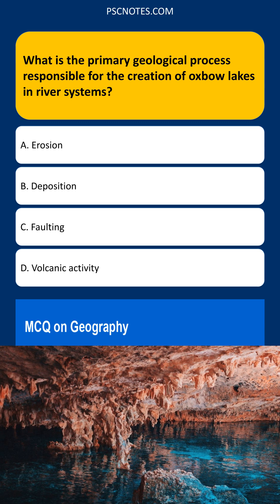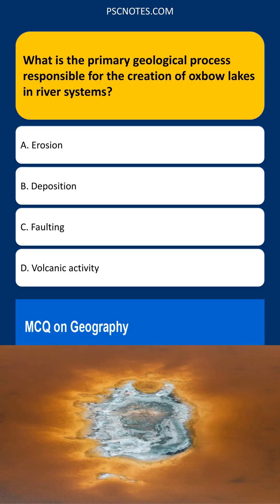This entire process is driven by the river's ability to both erode and deposit material. However, the final formation of the lake itself results from the deposition of sediment that cuts off the meander.